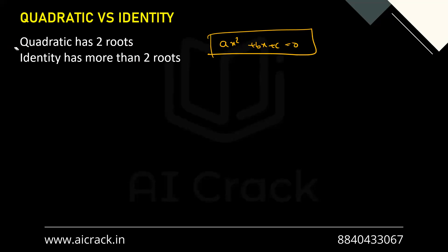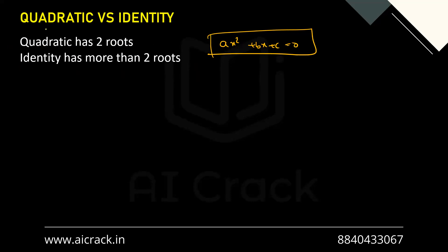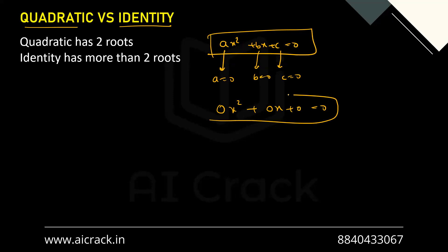There can be a case where a quadratic equation has more than two roots — in that case the quadratic equation becomes an identity. We can say a quadratic becomes an identity only when a = 0, b = 0, and c = 0. So basically all the coefficients and the constant are zero. The equation becomes 0x² + 0x + 0 = 0.